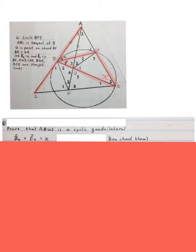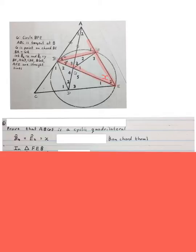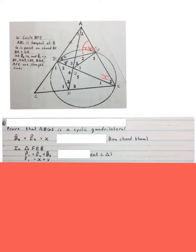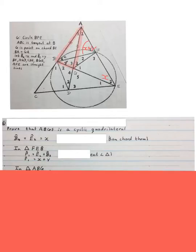Next, we can write in triangle FEB, that red triangle, angle F1 is equal to angle B3 plus E2. Exterior angles of a triangle: if you look at a triangle, the exterior angle is equal to the sum of the opposite interior angles. And that means that F1 is equal to X plus Y.